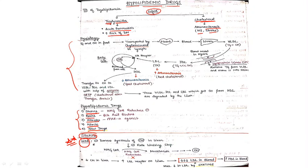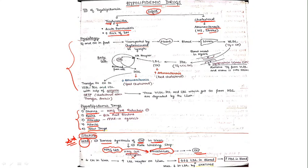The mechanism of action of statins: statins basically inhibit de novo synthesis of cholesterol in the liver. Statins inhibit the enzyme HMG-CoA reductase, because HMG-CoA is converted into mevalonate, which finally leads to cholesterol synthesis. This conversion of HMG-CoA to mevalonate is done by HMG-CoA reductase. Statins inhibit this enzyme, decreasing cholesterol synthesis.